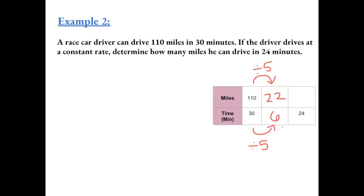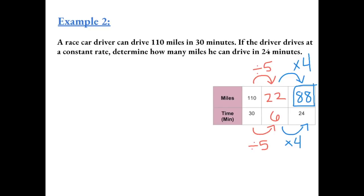Now from 6 minutes, we can go to 24 minutes by multiplying by 4. So we do the same thing to the number of miles: 22 times 4 gives us 88 miles. The driver will drive 88 miles in 24 minutes.